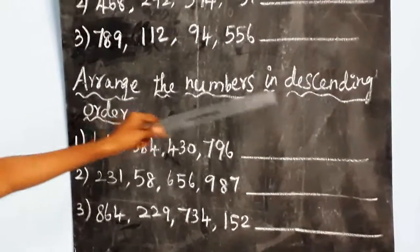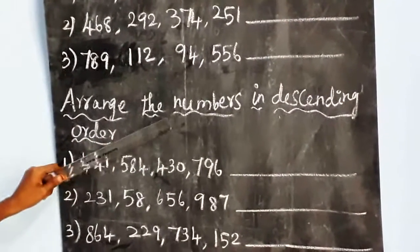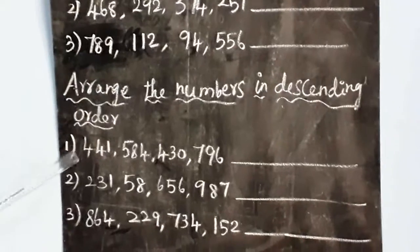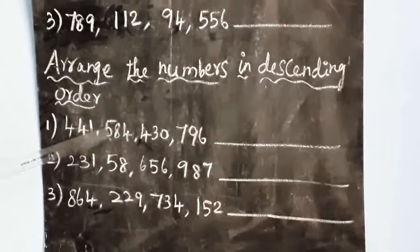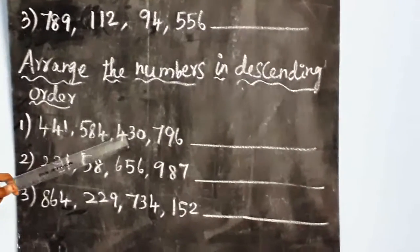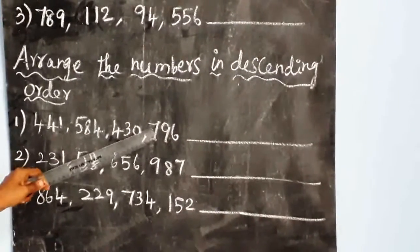Then arrange the numbers in descending order. Descending order means greatest to the smallest. First one: 441, 584, 430, 796.